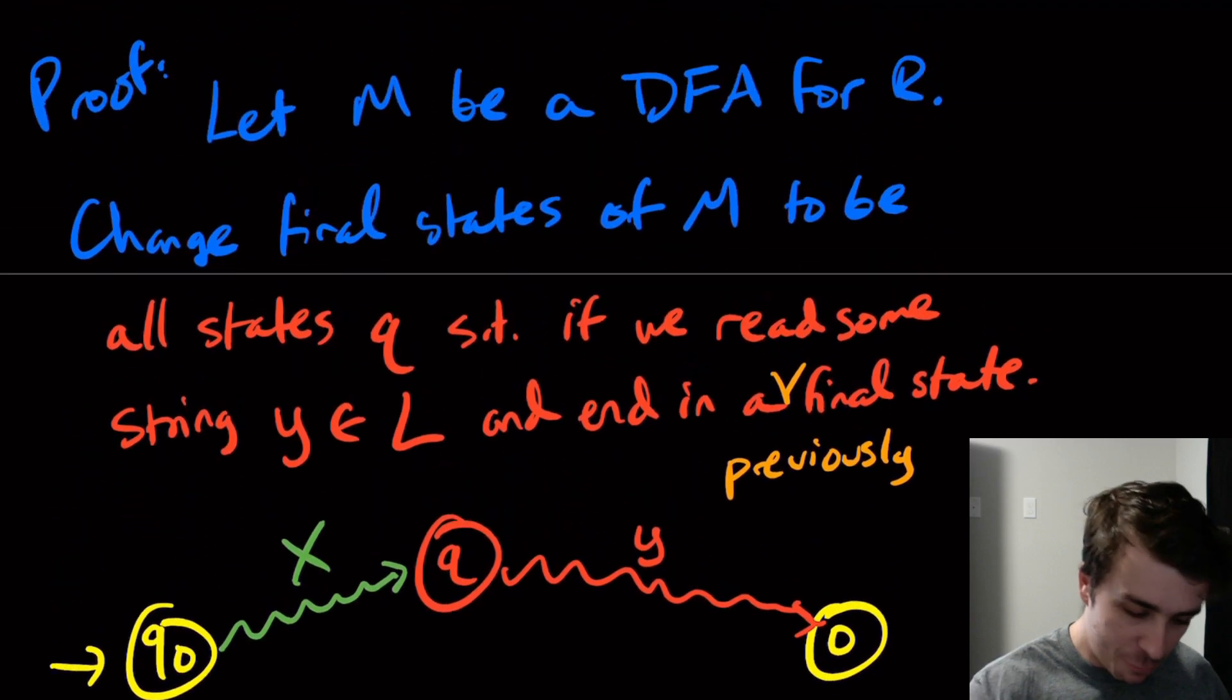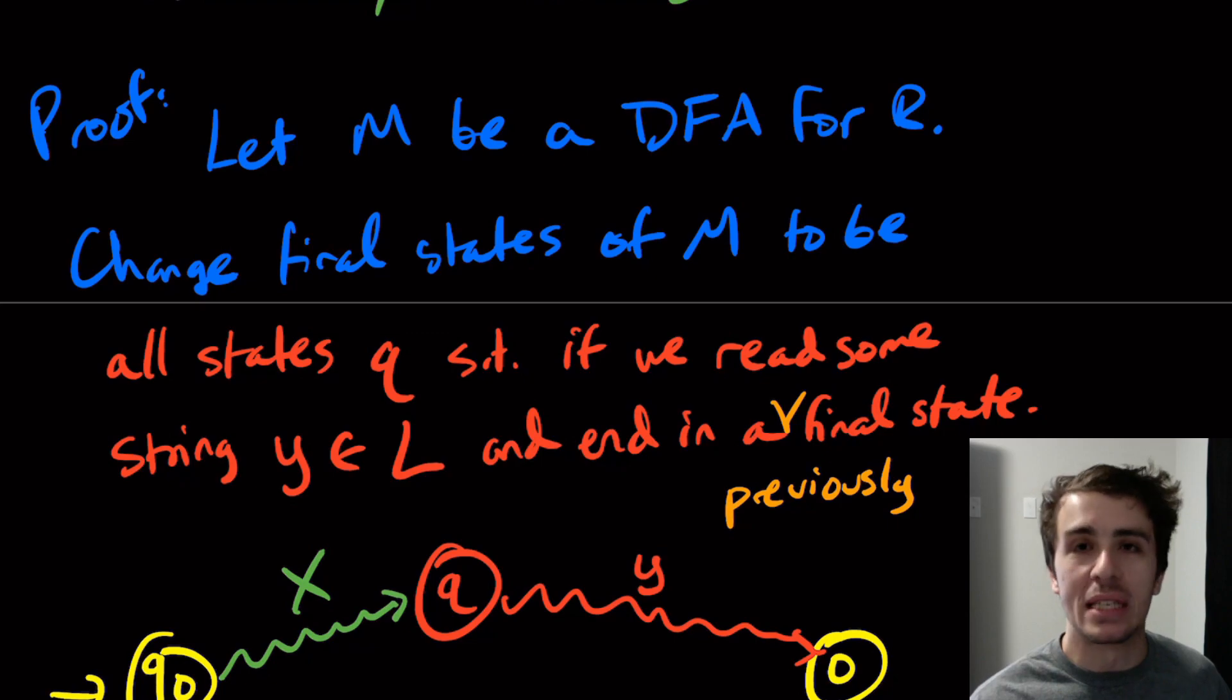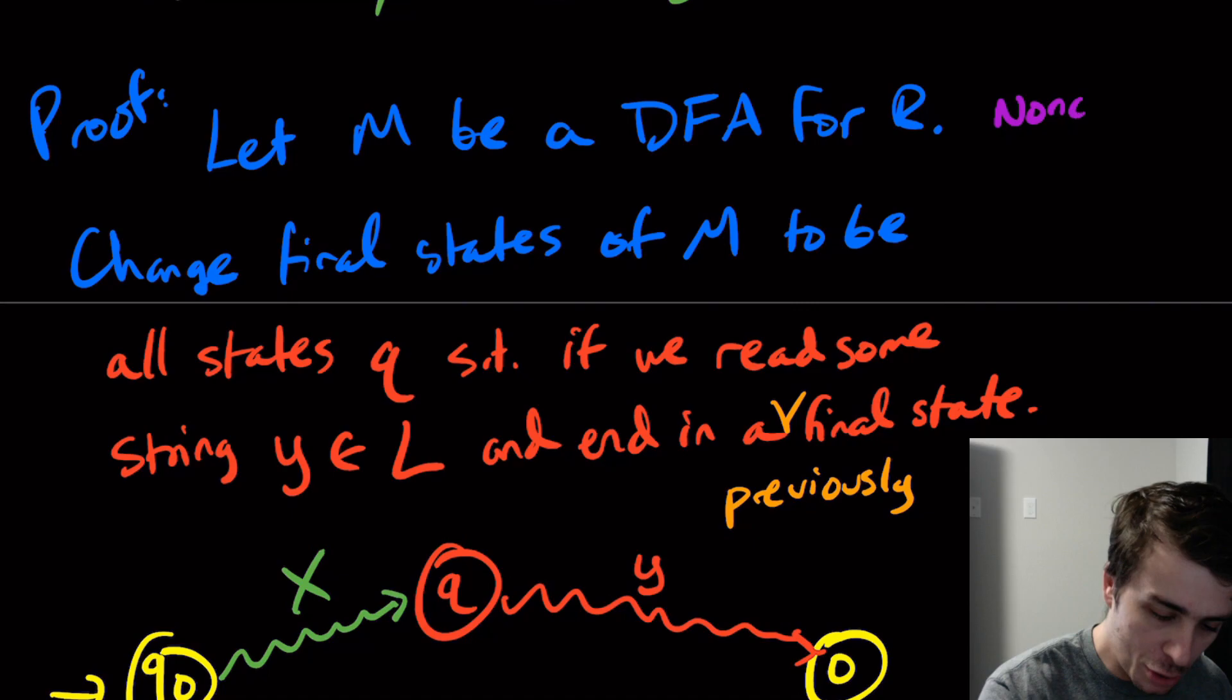The thing is that from this we actually don't know what the DFA looks like. Well, we know what the states and the transitions look like, we know that, but we don't know anything about the final states because it depends on the language L itself. It could be that none of the states are final or all of them are. But it's just that we don't know anything about what the final states are. So this is a non-constructive proof.